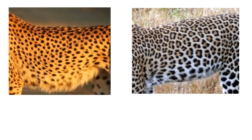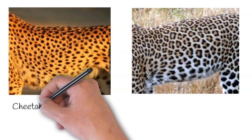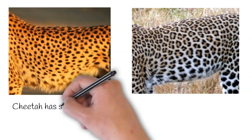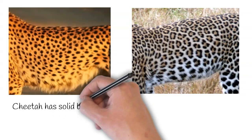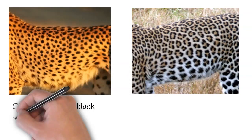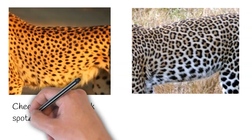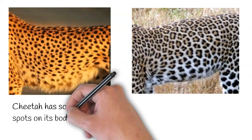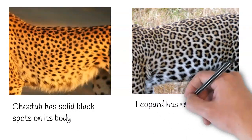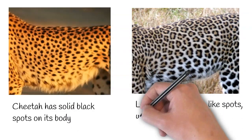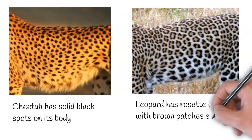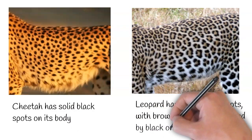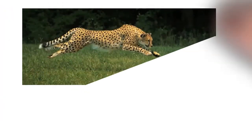On the body also, the appearances are quite different. A cheetah has solid black dots on its body, while a leopard has rosette-like spots with brown patches surrounded by black dots.